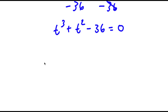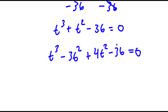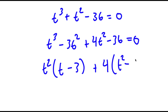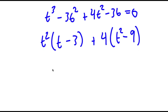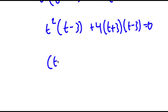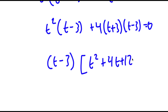Now that we have that value, I'm going to rewrite t cubed plus t squared minus 36 as t cubed minus 3t squared plus 4t squared minus 36 equals 0. Factoring out t squared from the first two terms gives t squared times t minus 3, plus 4 times t squared minus 9. This is the same as t squared times t minus 3 plus 4 times t plus 3 times t minus 3 equals 0. Factoring out t minus 3 gives t minus 3 times t squared plus 4t plus 12 equals 0.